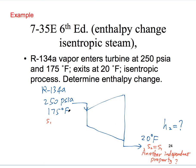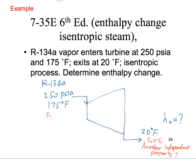Can we find S1? Yes, because we already have two properties of the refrigerant at the inlet, and they are potentially independent. As long as we can verify these two properties are independent, we can find S1.